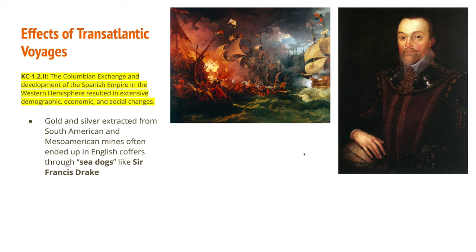The Columbian Exchange and development of the Spanish Empire resulted in extensive demographic, economic, and social changes. The gold and silver extracted from South America and Mesoamerica was turned into coins, changing economies all across Europe and leading to the start of capitalism. Sometimes that gold wouldn't make it back to Spain — it would be intercepted by sea dogs, a type of pirate, usually British, who would attack Spanish ships and steal the treasure inside.